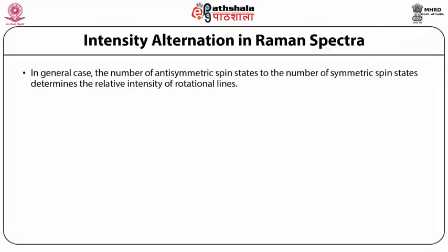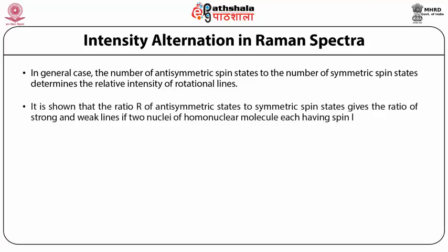In the general case, the ratio of anti-symmetric spin states to symmetric spin states determines the relative intensity of rotation lines. For two nuclei of a homonuclear molecule each having spin i, the ratio R = (i+1)/i for fermions and R = i/(i+1) for bosons.